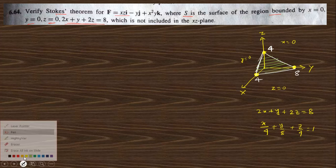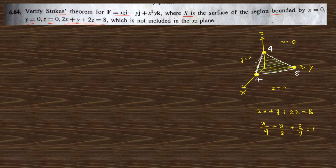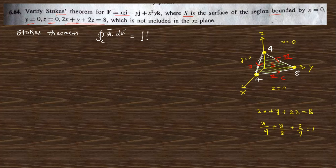We need to find the loop integral around that closed path, and we need to evaluate it on the surface. This is the curve and this is the loop. I take this as path 1, this as path 2, and this as path 3. Stokes theorem says the closed integral of any vector along a closed curve is equivalent to the surface integration of the curl of that vector over the surface enclosed by the loop.